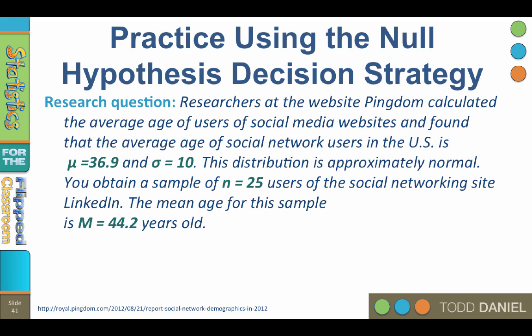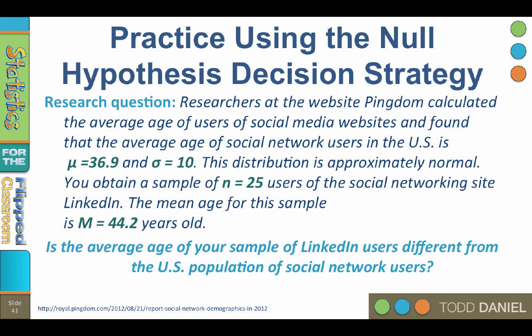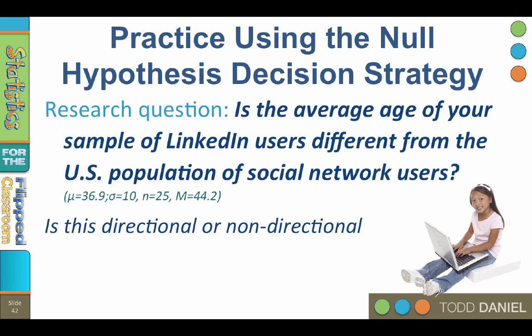This distribution is approximately normal. You obtain a sample of 25 users of the social networking site LinkedIn. The mean age for this sample is 44.2 years old. Is the average age of your sample of LinkedIn users different from the US population of social networking users? About that sample size — I've said that an n of 30 is a minimum, but I chose n of 25 for ease of calculation. Sometimes I will simplify for the sake of teaching concepts, and you'll see why 25 is useful when we do a square root. On every slide I will include the mean, standard deviation, sample size, and sample mean so that you will have them readily available as we do the math.